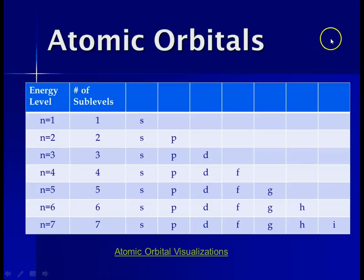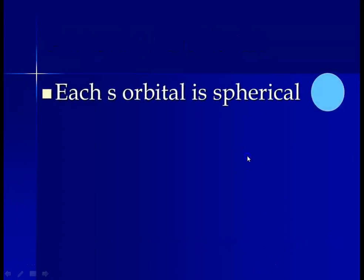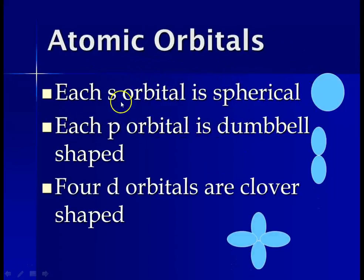So now going back to our slides. So that was that little website I showed you, the Atomic Orbital Visualizations. So recapping what we just saw, each S orbital is spherical in shape, although the University of Kentucky spheres are prettier colored.